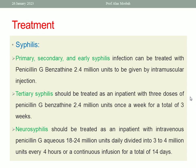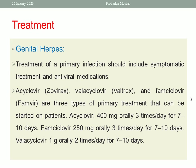What about genital herpes? Genital herpes is treated with symptomatic treatment and antiviral medication. The antiviral medication can be one of three options: acyclovir 400 mg orally three times per day for 7 to 10 days; famciclovir 250 mg orally three times per day for 7 to 10 days; or valacyclovir 1 gram orally two times per day for 7 to 10 days.